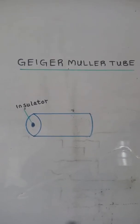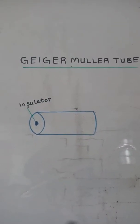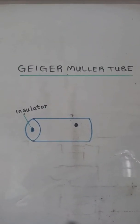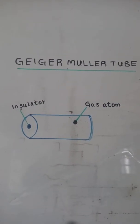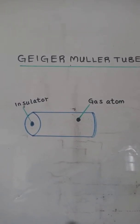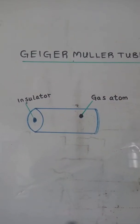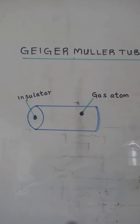It consists of a hollow tube filled with a noble gas such as argon. At one end is a thin window made of mica through which the radiation enters the tube.